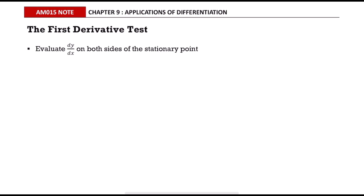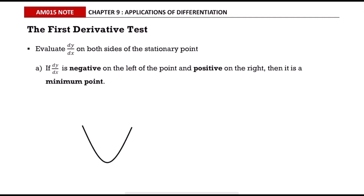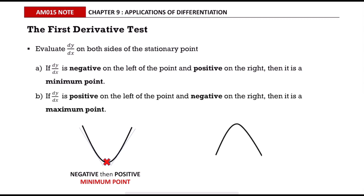In this video we will use the first derivative test to determine the extremum point. In this test we evaluate dy/dx on both sides of the stationary point. If dy/dx is negative on the left and positive on the right, it is a minimum point. If dy/dx is positive on the left and negative on the right, it is a maximum point.